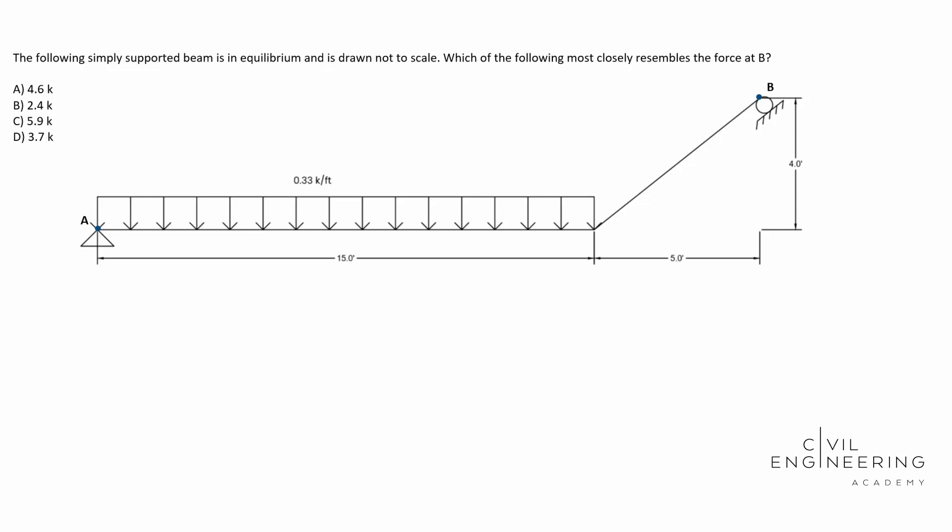Hey what's going on everybody, welcome back to Civil Engineering Academy. My name is Cody, let's go ahead and get started. Today we have a structural mechanics problem and we're going to be solving for an unknown reaction force. The following simply supported beam is in equilibrium and is drawn not to scale. Which of the following most closely resembles the force at B? We see our four answers in kips. Our units are in feet and kips and we have a distributed load of 0.33 kips per foot over 15 feet.